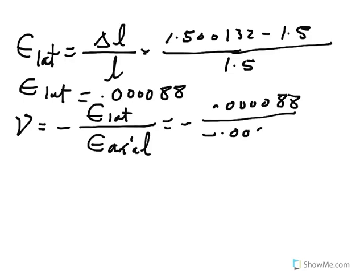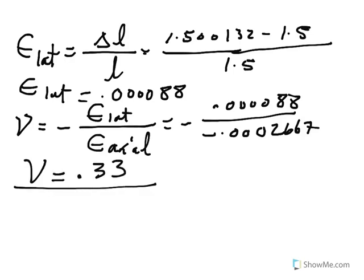The axial strain from the last page was 0.0002667, it was negative. So, negative and negative canceled one another. This is roughly 0.33, which is consistent with the Poisson's ratio value of the property for aluminum.